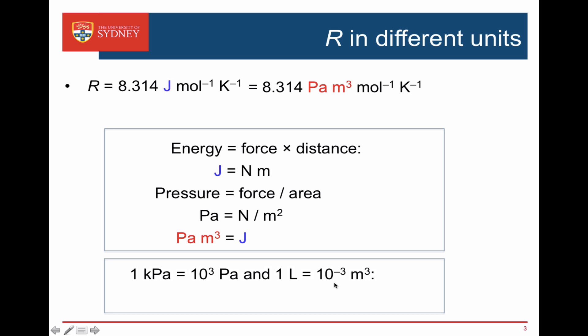So if we use kilopascals which are a thousand pascals, a kilopascal times a liter is the same as a Pascal times a meter cubed. And that's really convenient. Because R now becomes also 8.314 kilopascal liter moles to the minus one Kelvins to the minus one. So if we're using liters and kilopascals we can still use the value 8.314.